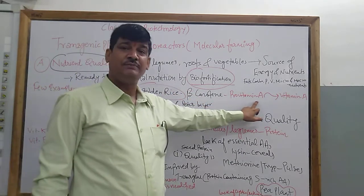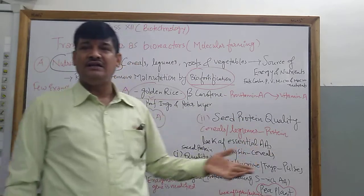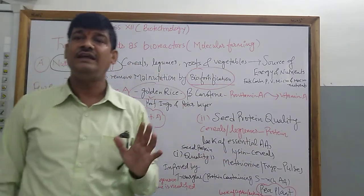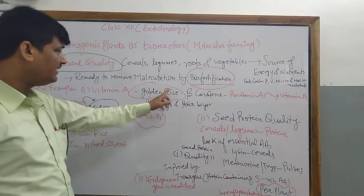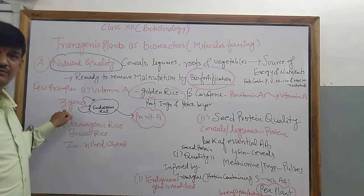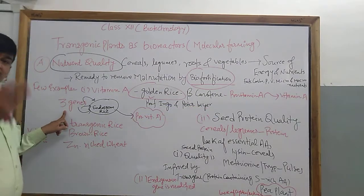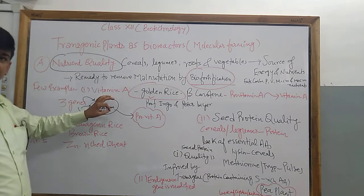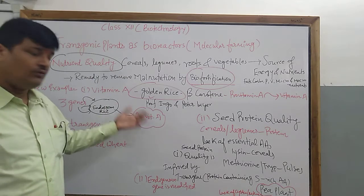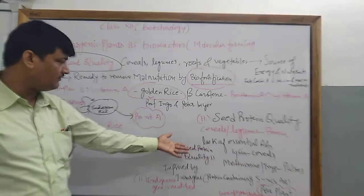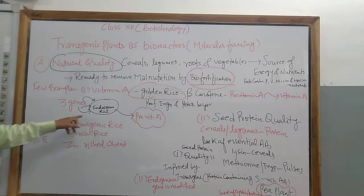The rice contains beta carotene, which is a precursor of pro-vitamin A. When pro-vitamin A is converted into vitamin A, ultimately the staple food rice will have a good source of vitamin A in its grain. Three genes were taken out by genetic engineers Professor Ingo and Peter Bayer and incorporated into the endosperm of the rice. With the entry of these three genes, the endosperm of rice is able to produce more pro-vitamin A, which is further converted into vitamin A.